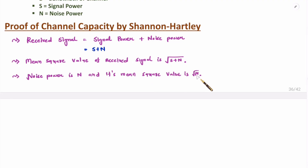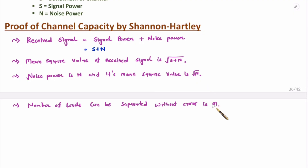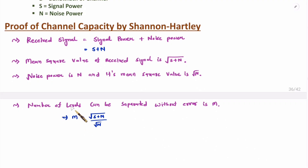Now you need to understand how many levels can be detected without error. If M is the number of levels that can be detected without error, then M equals the mean square value of the received signal divided by the mean square value of noise, which gives M = √((S+N)/N) = √(1 + S/N).